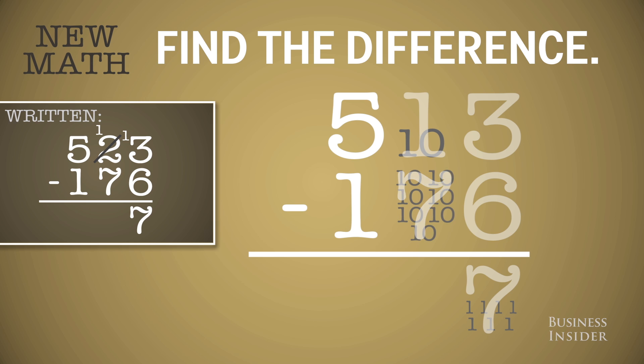And 7 is larger than 1, so you regroup your 100s into 4 hundreds and 10 tens. 7 tens from 11 tens is 4 tens. And 1 from 4 is 3.